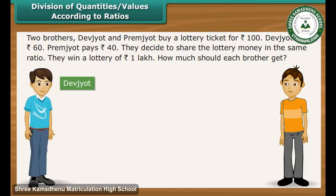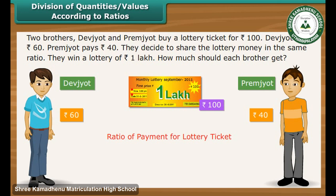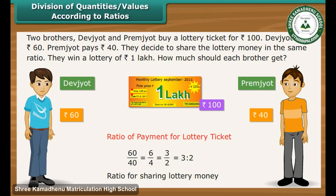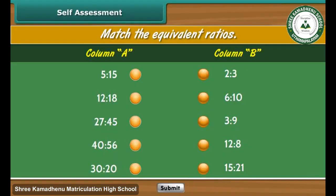Two brothers, Dev Joth and Prem Joth, buy a lottery ticket for Rs. 100. Dev Joth pays Rs. 60 and Prem Joth pays Rs. 40. They decide to share the lottery winnings in the same ratio. They win a lottery of Rs. 1 lakh. The ratio of their payments is 3 is to 2. Out of every 5 rupees won, 3 go to Dev Joth and 2 go to Prem Joth. Dev Joth's share is Rs. 60,000 and Prem Joth's share is Rs. 40,000.